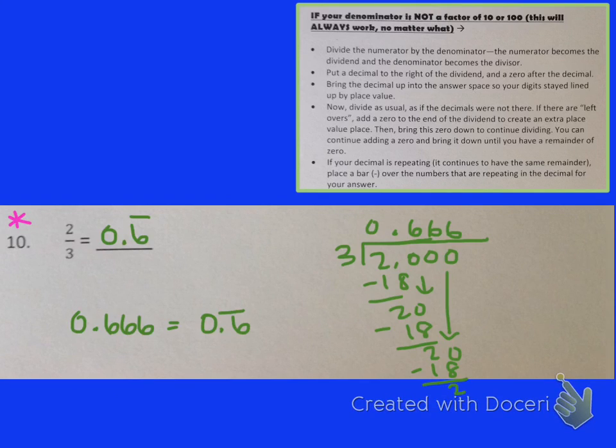So the answer to this one looks kind of interesting because there is a bar over my 6. That means the 6 is repeating. When you look at my division here, you'll see a pattern. I'm constantly writing the number 6 up top, and every time there's a leftover of 2. So when I bring another 0 down, it's 3 going into 20, which is always 18. 6 times 3 is 18. So it's happening over and over again, which means it's repeating.